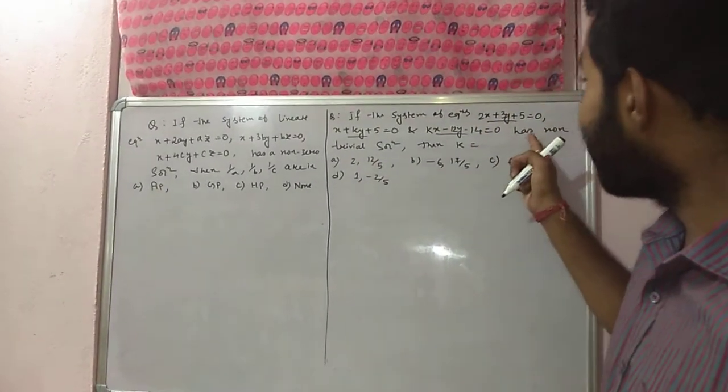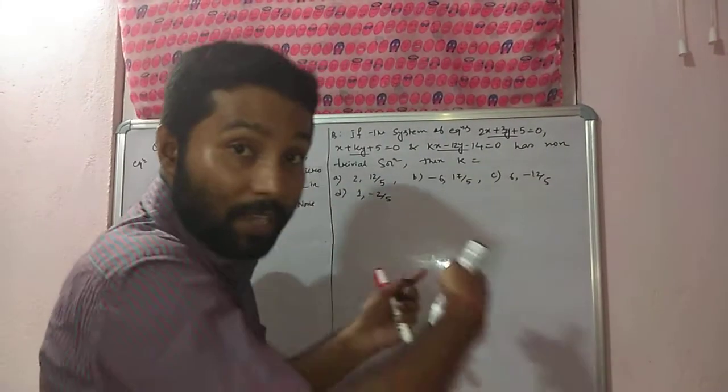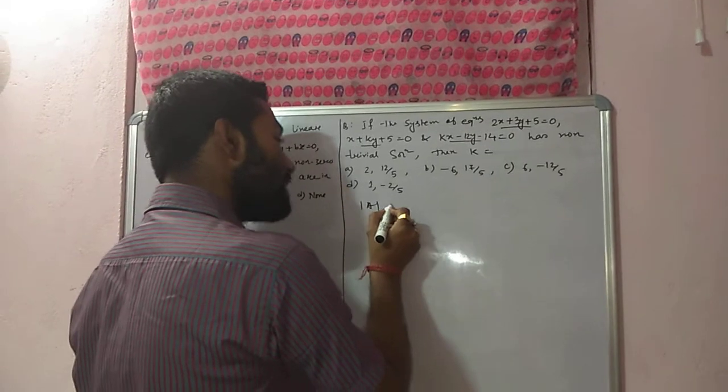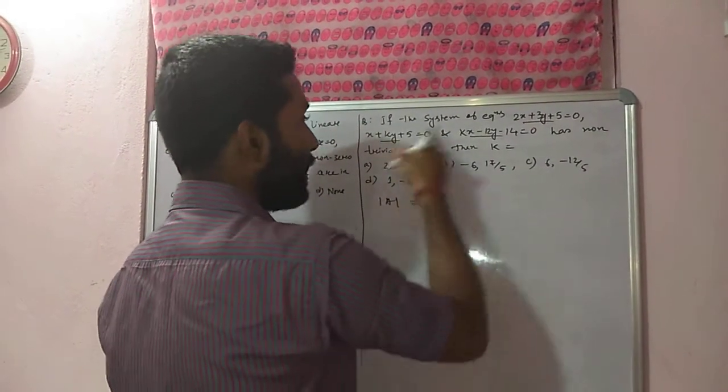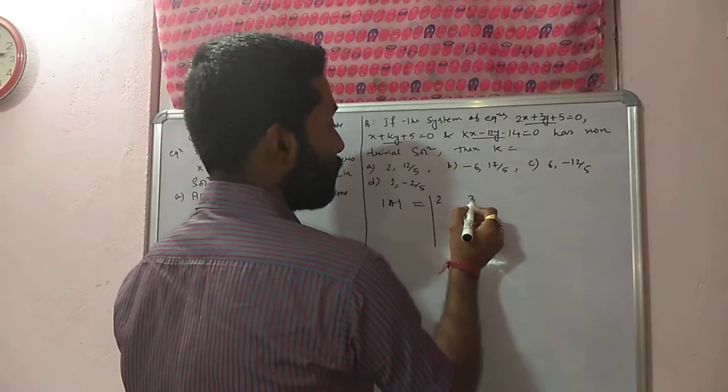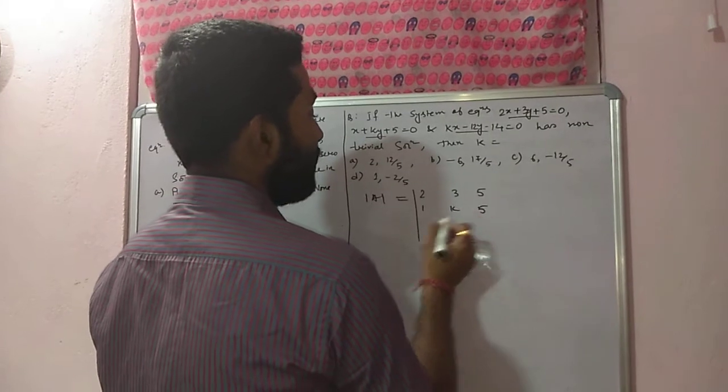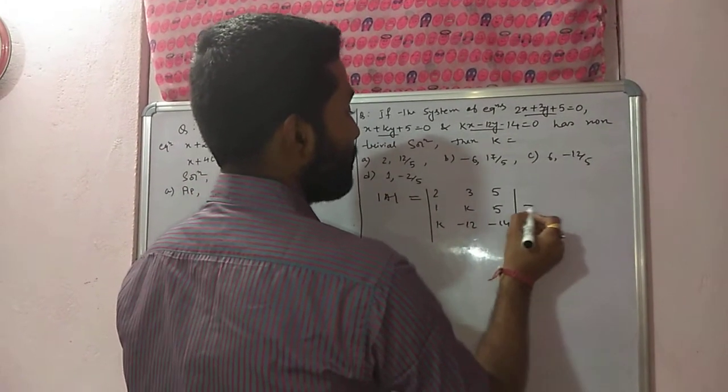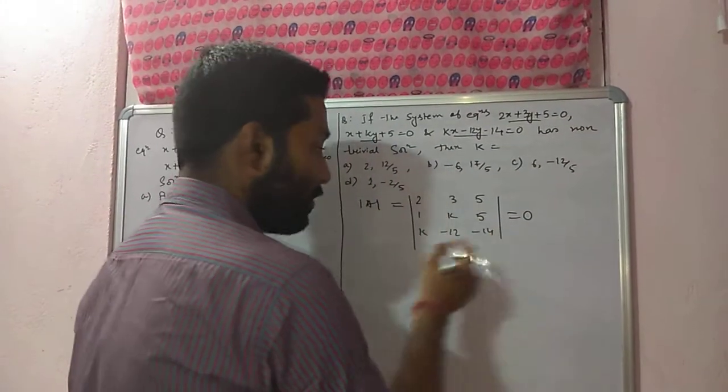If this system has a non-trivial solution, what is the condition? Condition of non-trivial solution is determinant of A is equal to zero. So determinant of A, first express it as 2, 3, 5, 1, k, 5, k, minus 12, minus 14. It must be equal to zero. For non-trivial solution, we know this is equal to zero only.